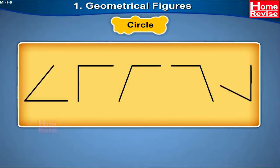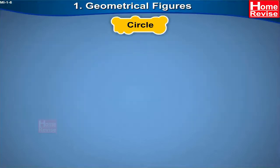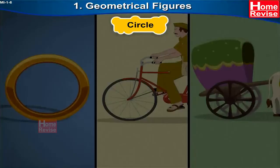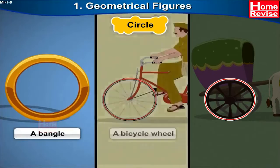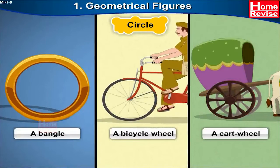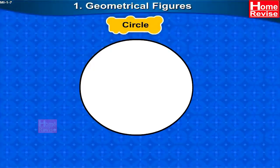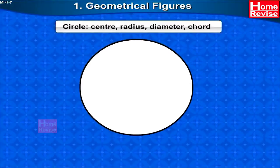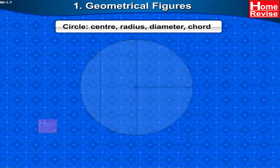Now we will learn about a circle. There are various things around us which are in the form of a circle, such as a bangle, a bicycle wheel, and a cartwheel. All these objects are circular. Let us learn some more about a circle: center, radius, diameter, and chord.